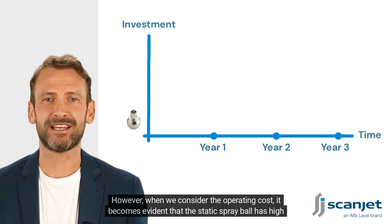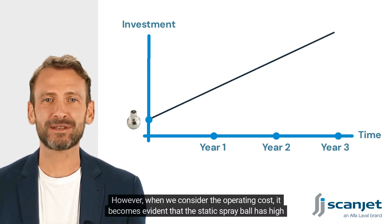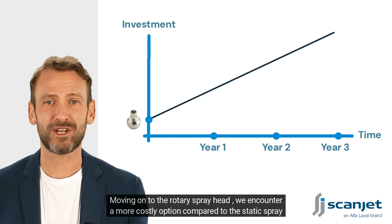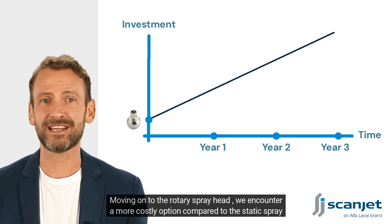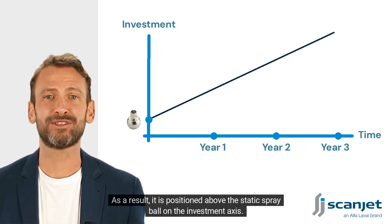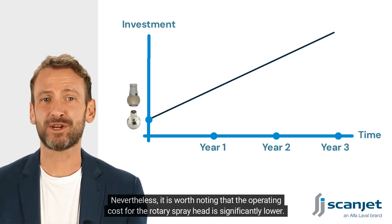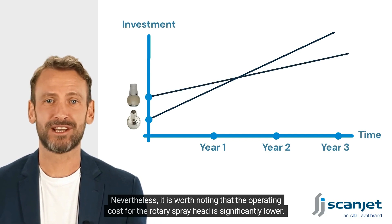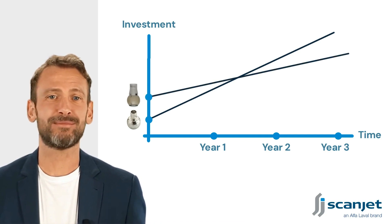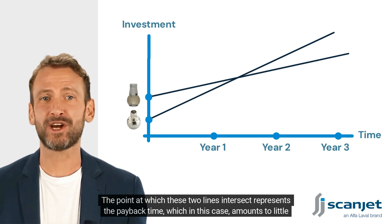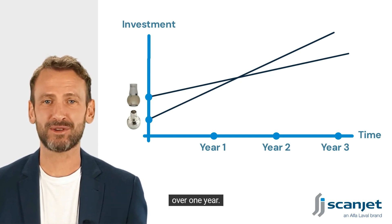However, when we consider the operating cost, it becomes evident that the static spray ball has high operating costs. Moving on to the rotary spray head, we encounter a more costly option compared to the static spray ball, positioned above it on the investment axis. Nevertheless, the operating cost for the rotary spray head is significantly lower. The point at which these two lines intersect represents the payback time, which in this case amounts to a little over one year.